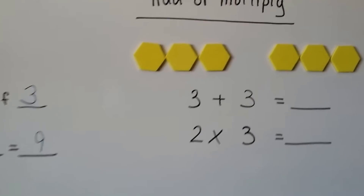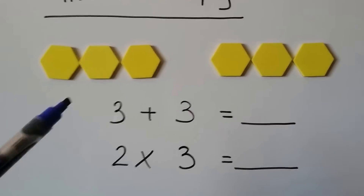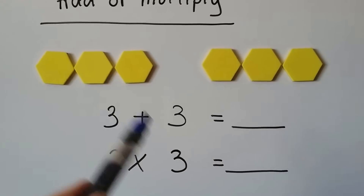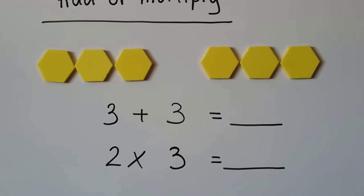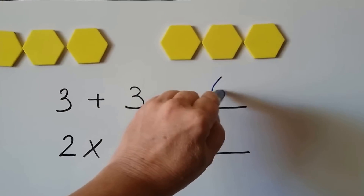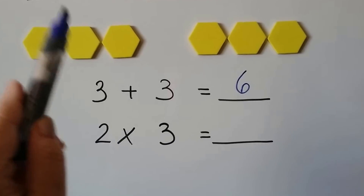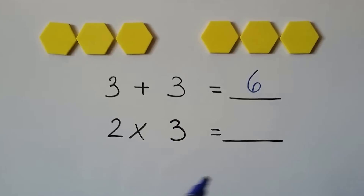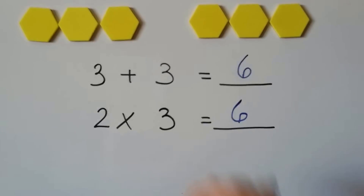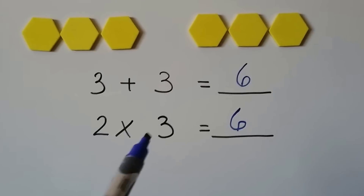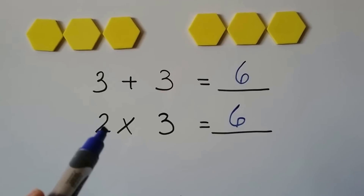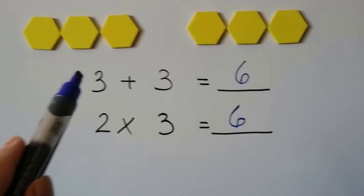It says add or multiply. We've got 3 yellow hexagons and 3 yellow hexagons. That's 3 plus 3, and 3 plus 3 is 6. We also have 1 group, 2 groups with 3 in each group — 2 times 3 is 6. Multiplication is just repeated addition. It's saying we have 2 threes.